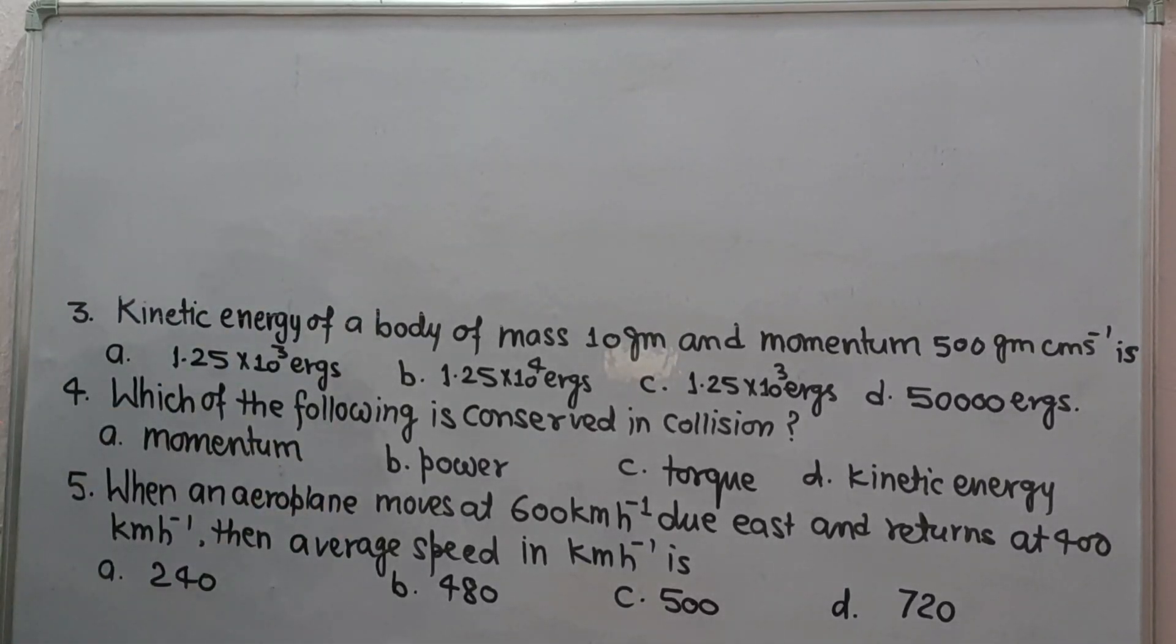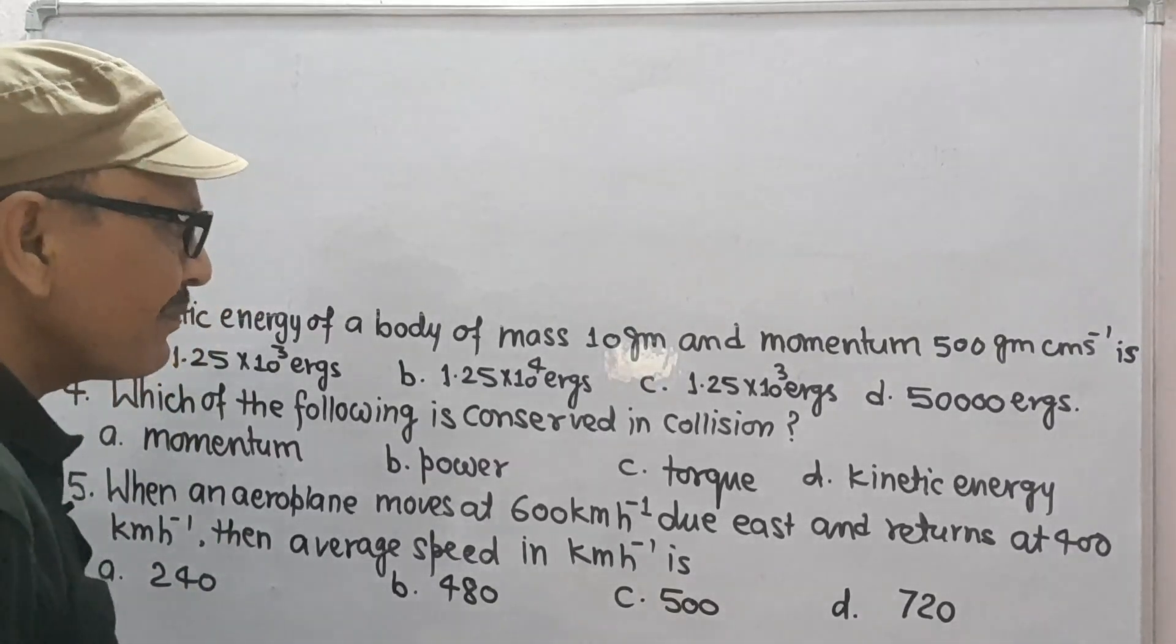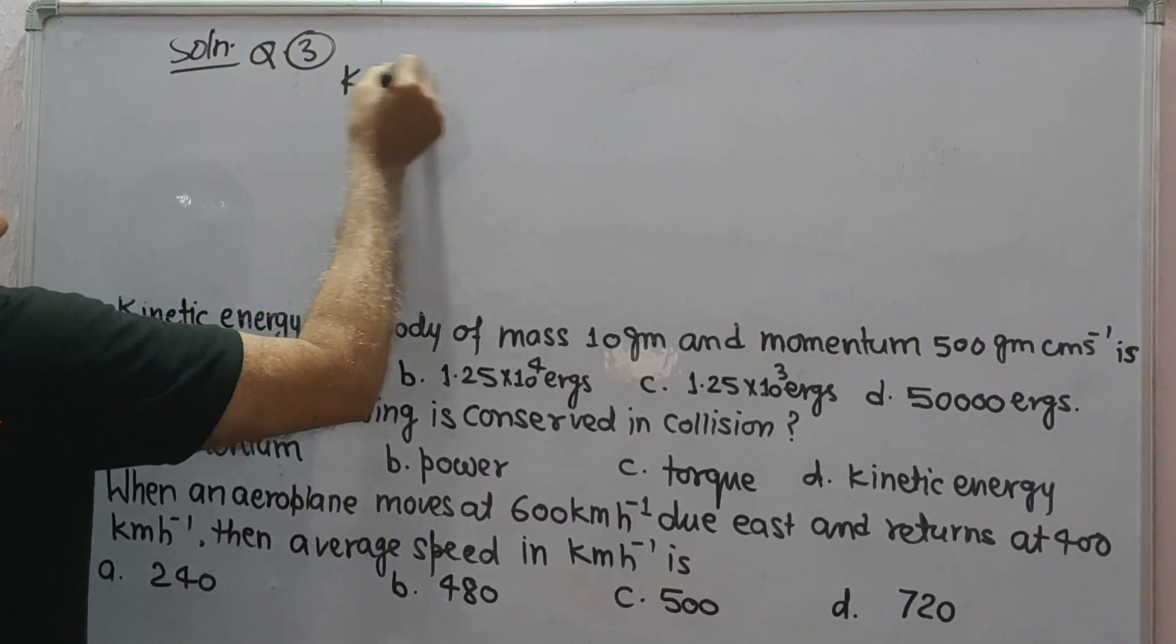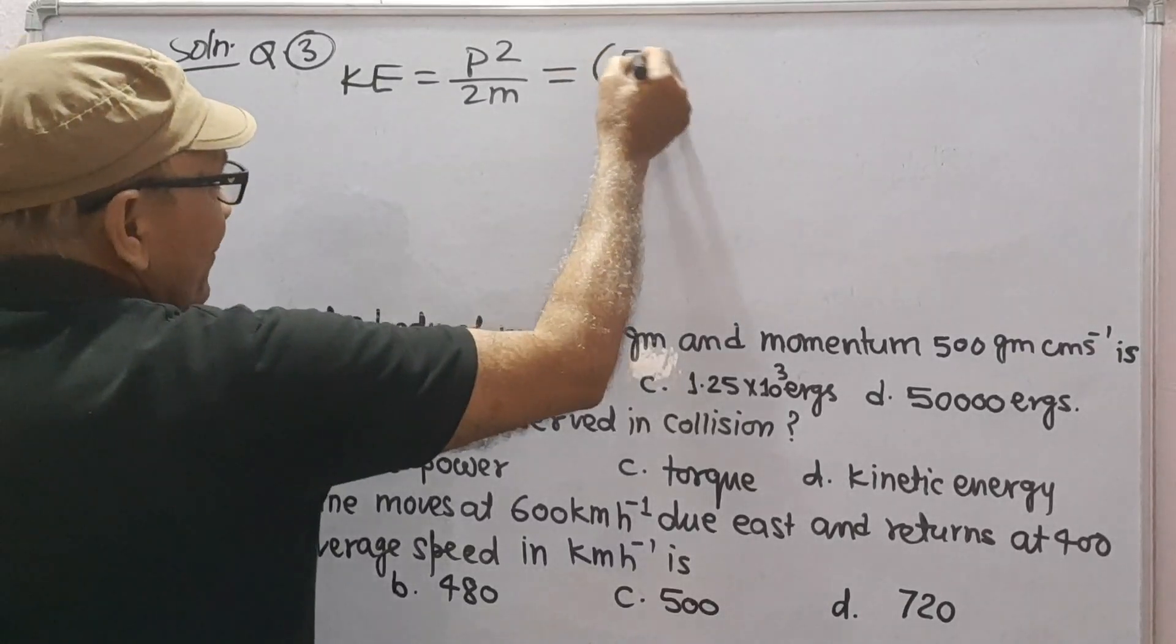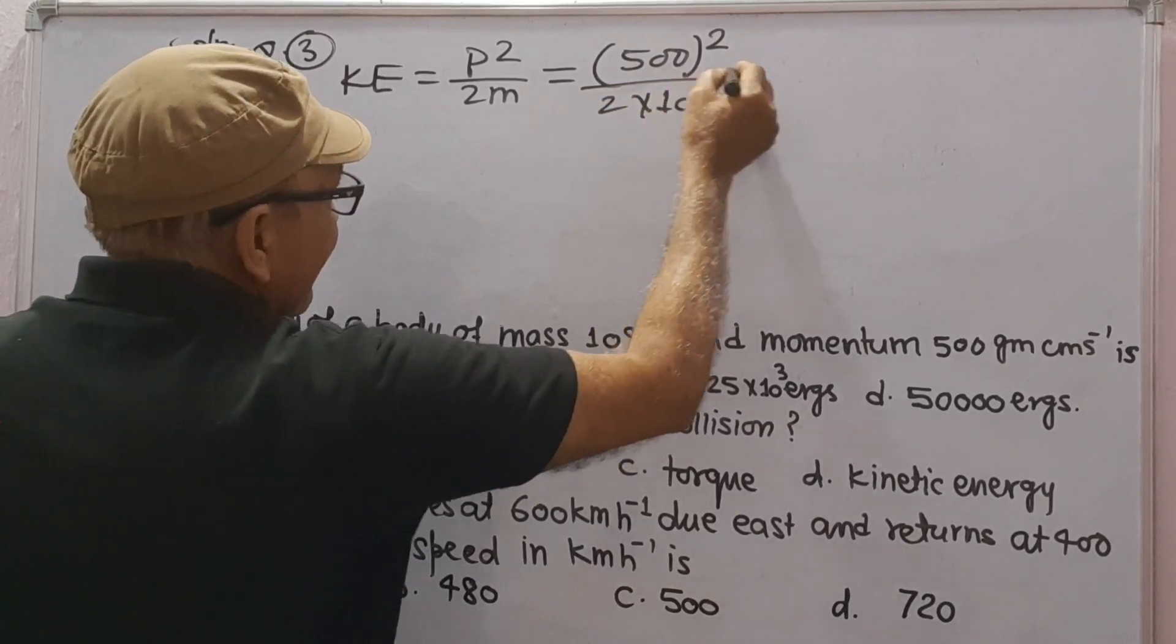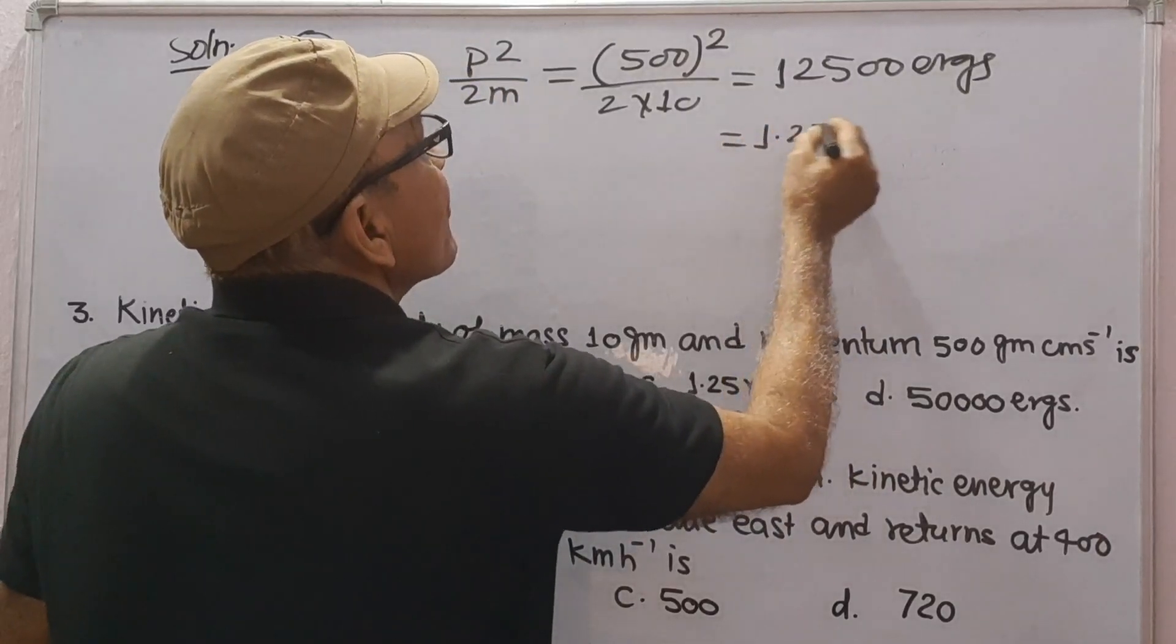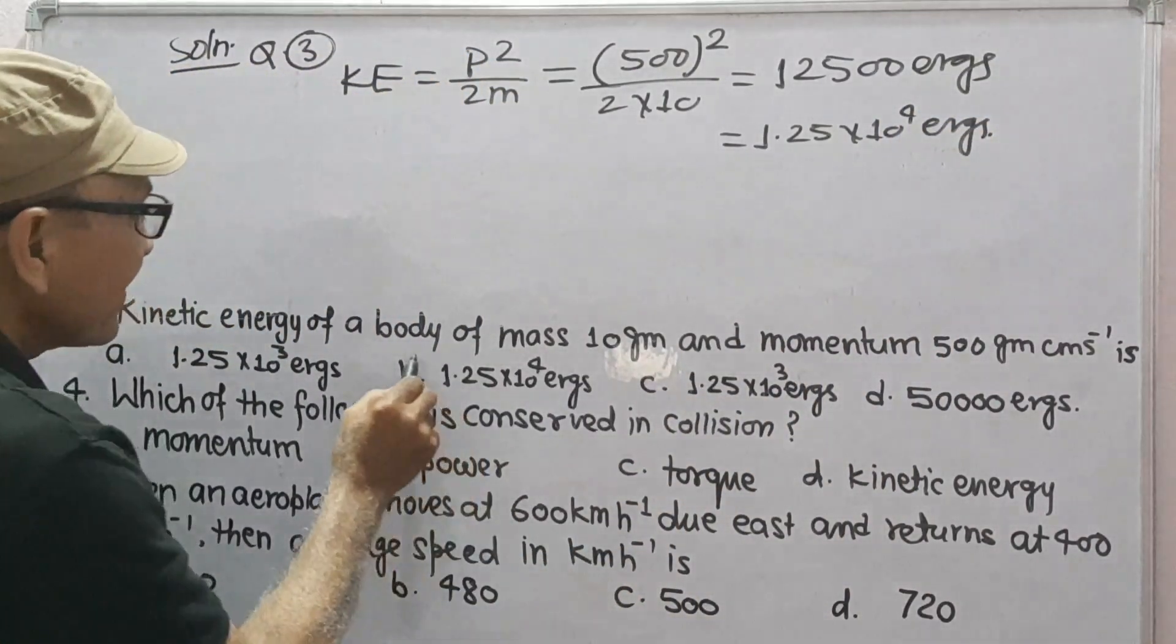Next question number three: kinetic energy of a body of mass 10 gram and momentum 500 gram cm per second is - these are the options. Solution to question 3: we know kinetic energy is equal to P squared upon 2m, where P is linear momentum. Linear momentum is 500 squared upon 2m is 10, it gives 12,500 ergs which can be written as 1.25 into 10 to power 4 ergs. So the correct option will be C.